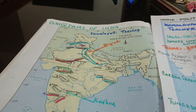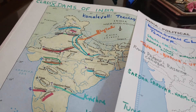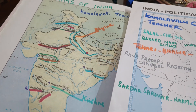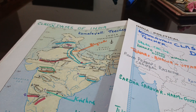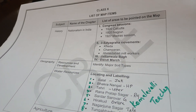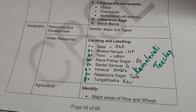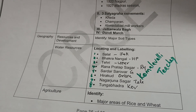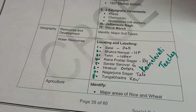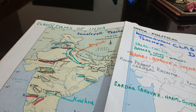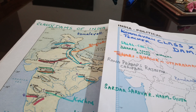I hope you understood. This is an easy method of learning the dams enlisted in the Class 10 CBSE syllabus — the eight names of the dams and their states. I have done a full map that you can go through. Thank you all.